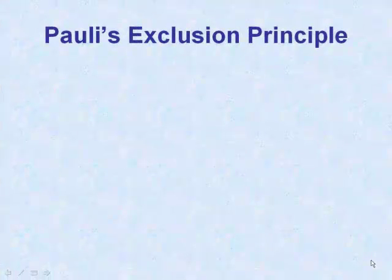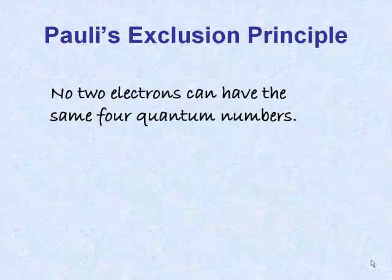The Pauli's Exclusion Principle states that no two electrons can have the same four quantum numbers.